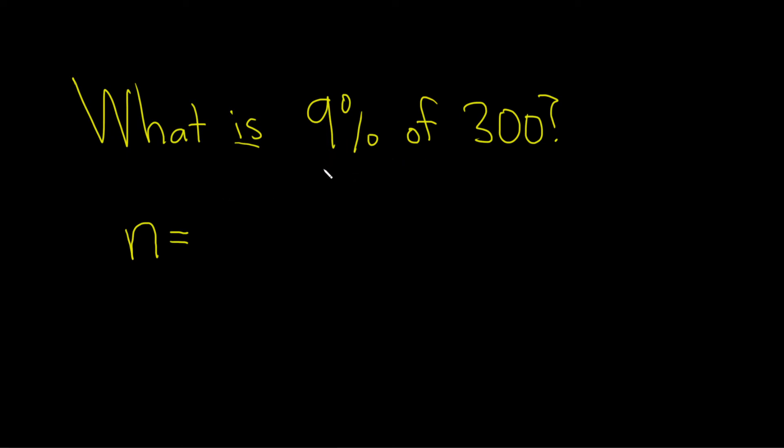So in these problems you want to convert your percentage to a decimal. If we have 9% and we want to convert it to a decimal, the decimal starts here and we have to go left two times. So 1, 2. That means we're going to have .09 as our decimal.